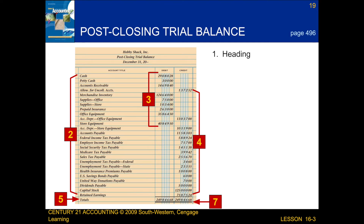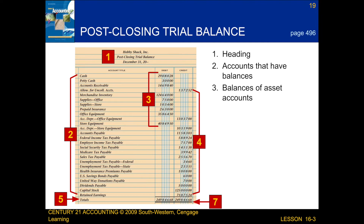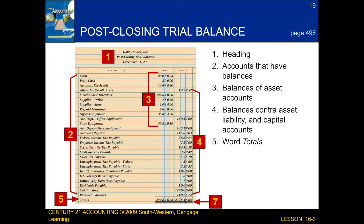First, we write the heading. Next, we write the titles of the accounts that have balances. After that, we record the balances of the asset accounts. Following that, we record the balances of the contra asset, liability, and capital accounts. Then, we write the word totals. Next, we calculate the totals of the asset accounts. And finally, we draw a double-line rule to indicate that the numbers in the debit and credit columns are both equal.